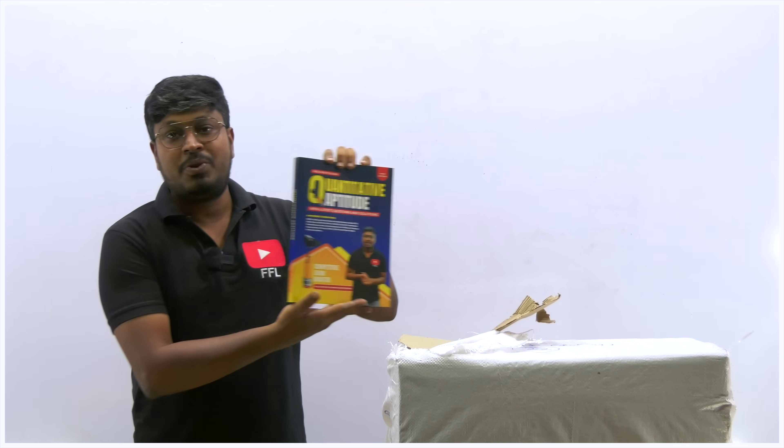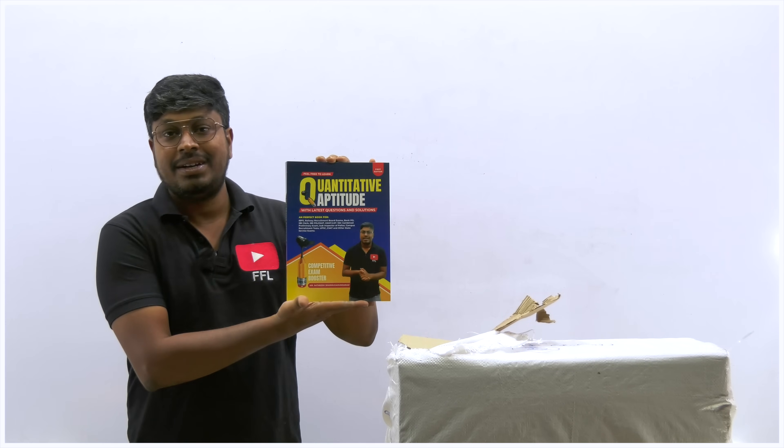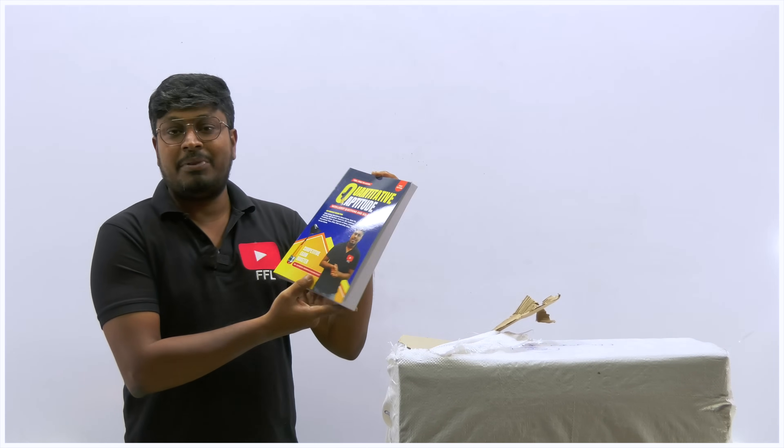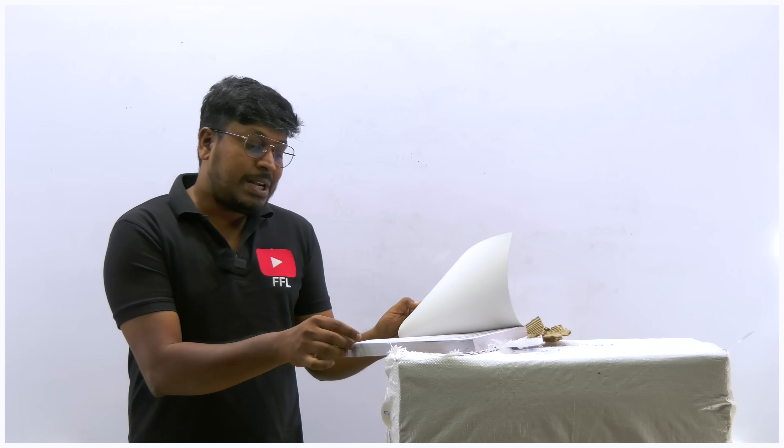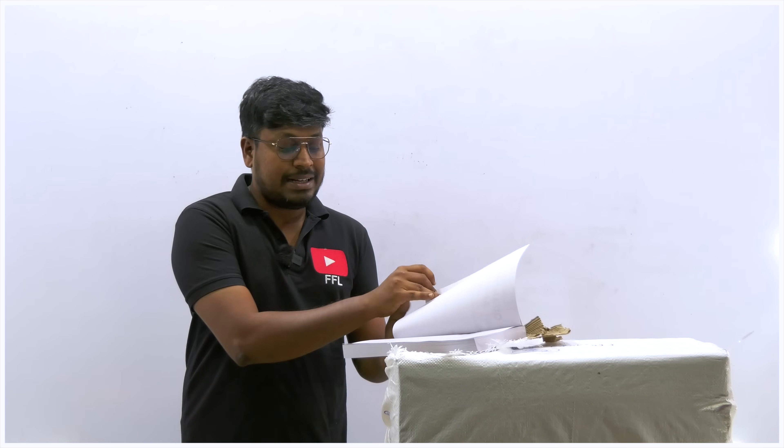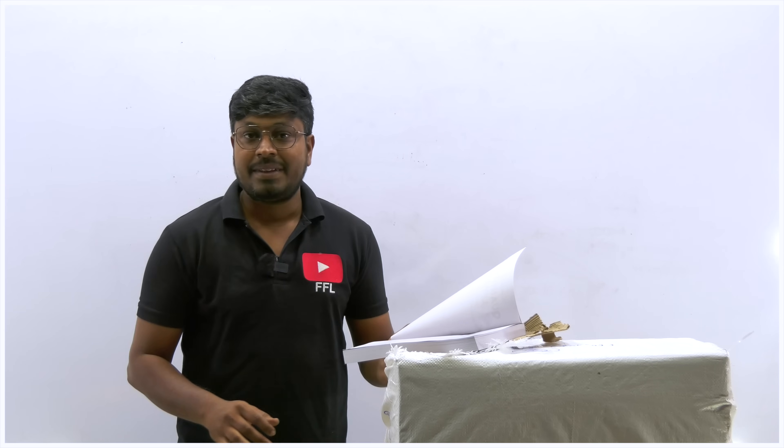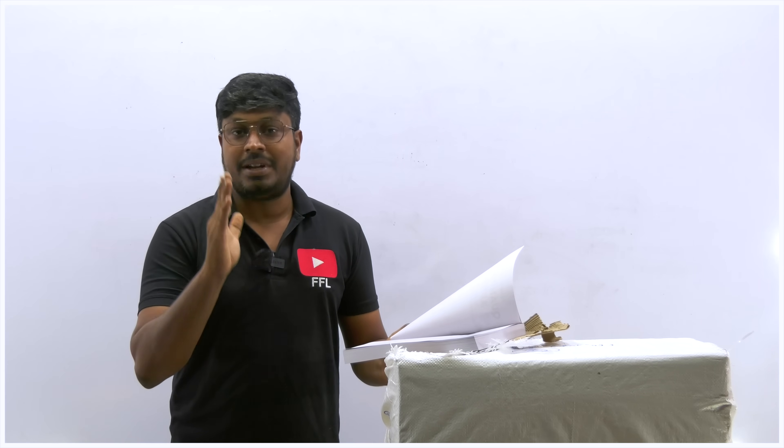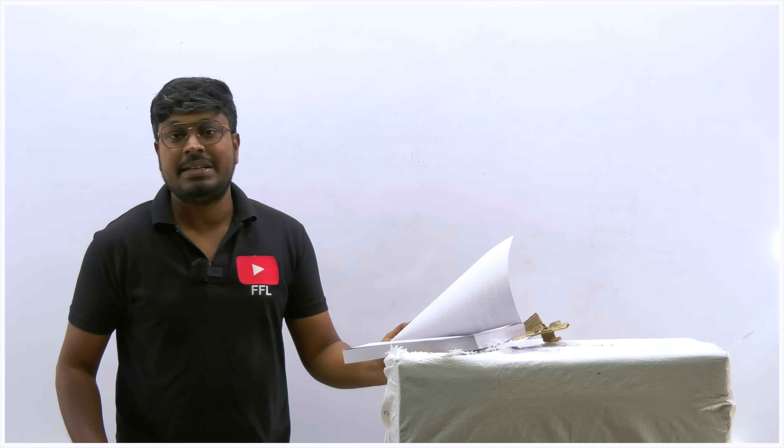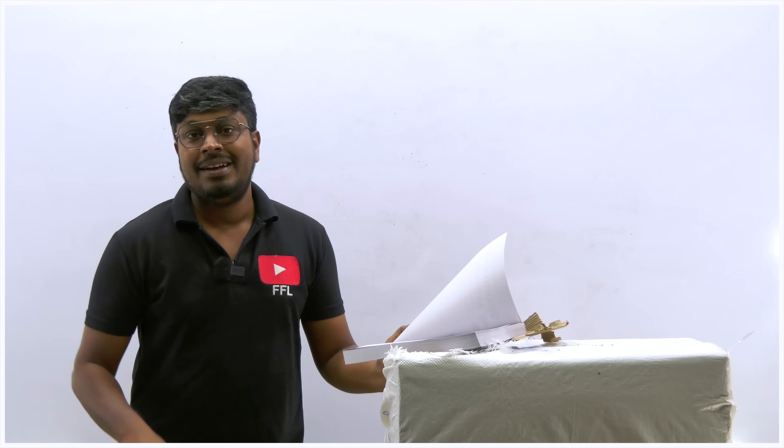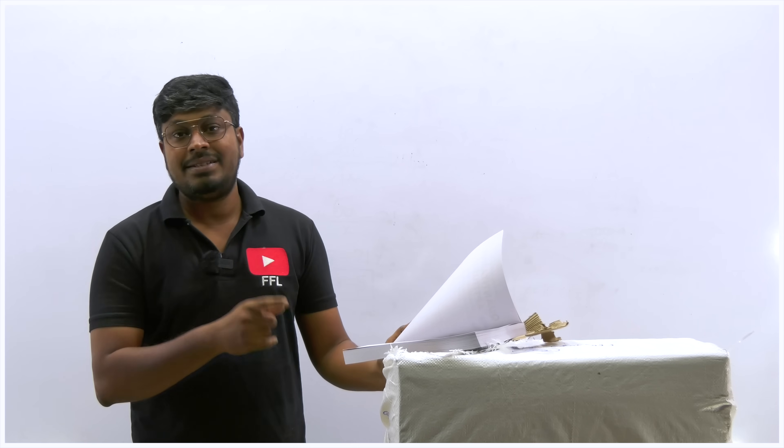I have written each and every topic and then converted into my first quantitative aptitude book. So here is my first book. The total number of pages is 533 pages, and total number of topics that I have covered is 35 topics. Most important questions I have given for the current year competitive exam. Once you practice this, you will feel what the real competitive exam is.